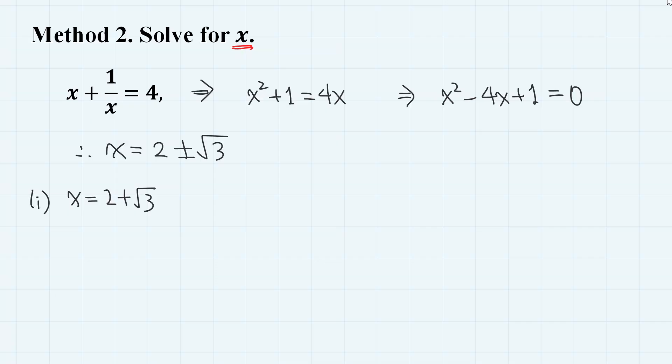When x equals 2 plus square root of 3, then x minus 1 over x equals 2 plus square root of 3 minus 1 over 2 plus square root of 3. So we have 2 plus square root of 3. And by rationalizing the denominator, you can easily find out that the second part is 2 minus square root of 3. So we obtain 2 square root of 3.